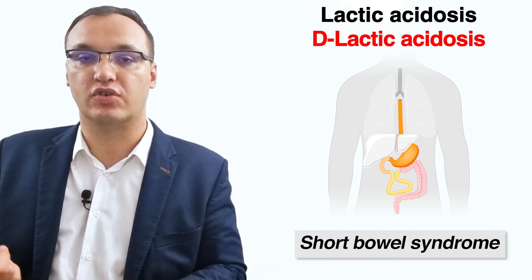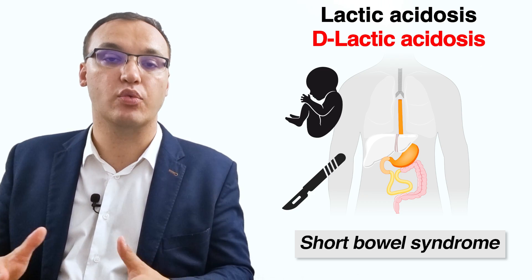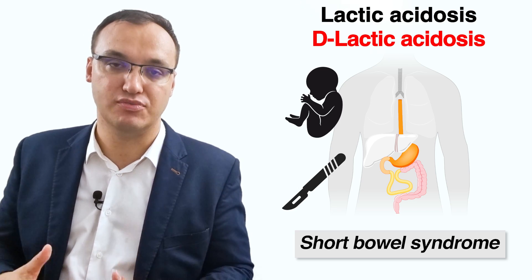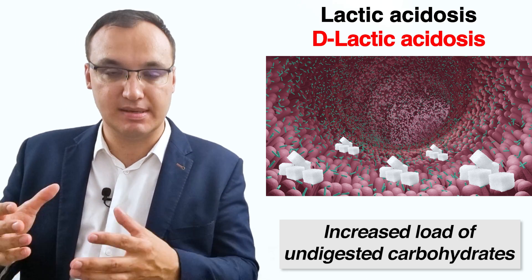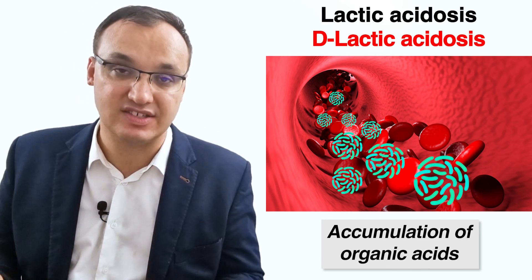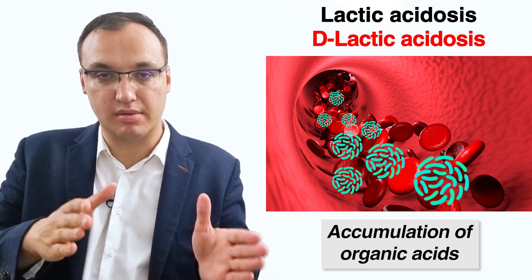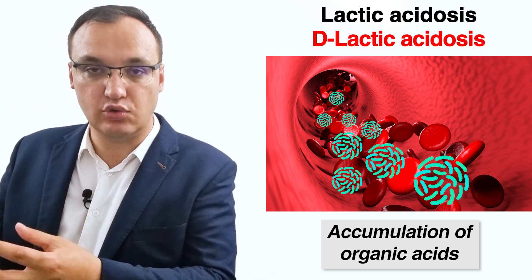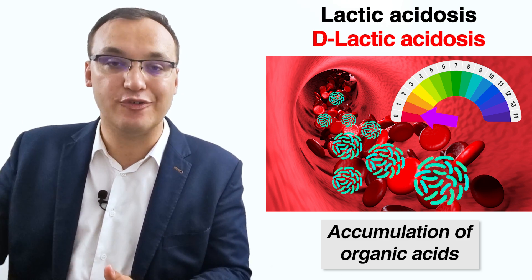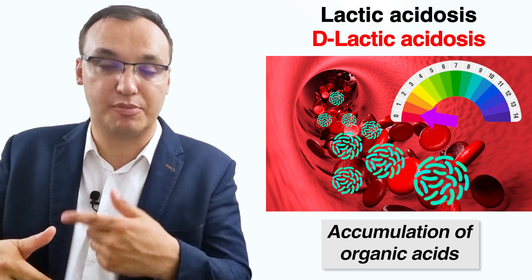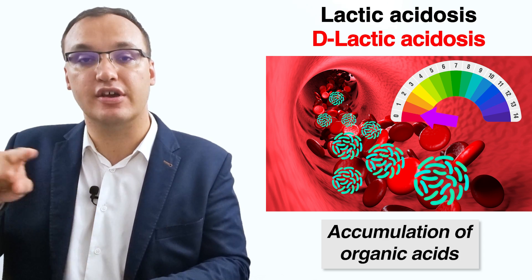D-lactic acidosis occurs in patients with intestinal malabsorption, such as short bowel syndrome, where parts of the small intestine are missing or surgically removed. This leads to an increased load of undigested carbohydrates in the colon, causing substantial amounts of glucose and starch to be fermented by intestinal bacteria into multiple organic acids, including D-lactic acid. The amount of organic acids produced exceeds what can be metabolized, leading to accumulation and a more acidic environment. The lower pH then favors the growth of acid-resistant bacteria responsible for producing D and L lactate, generating a vicious cycle of further pH decrease.